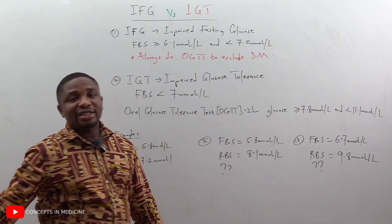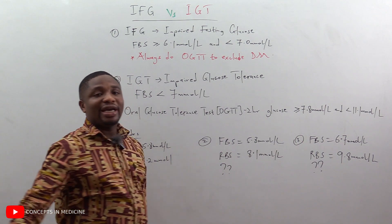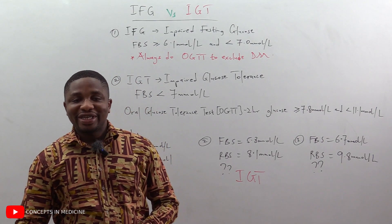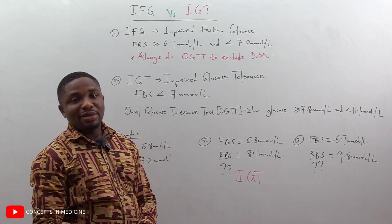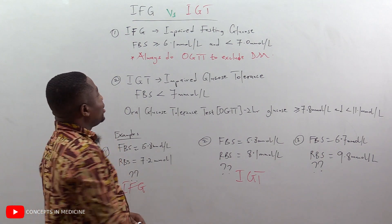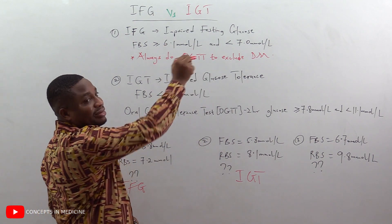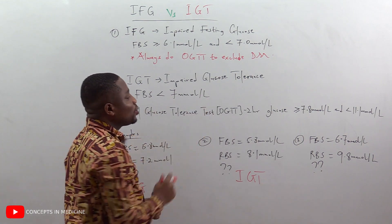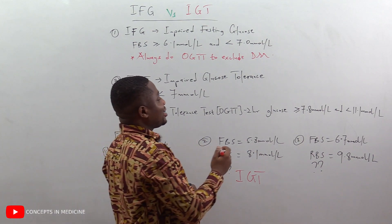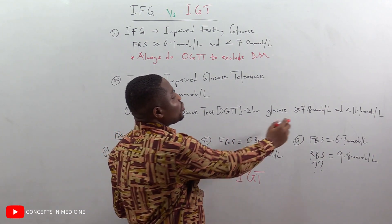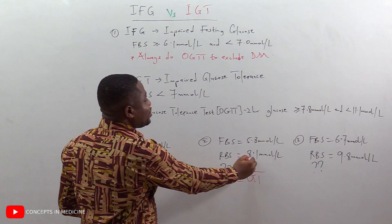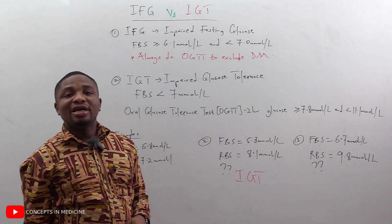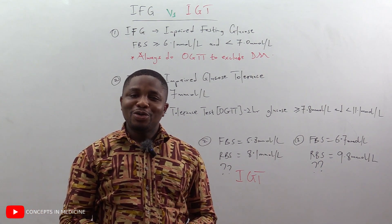Second example: fasting blood sugar 5.8 mmol/L, random blood sugar 8.1 mmol/L. For the fasting blood sugar, 5.8 is lower than 6.1, so it does not meet the criteria for impaired fasting glucose. For impaired glucose tolerance, we need the random blood sugar or OGTT two-hour glucose to be greater than or equal to 7.8 and less than 11.1. Our value of 8.1 falls within this range, so the answer is impaired glucose tolerance.